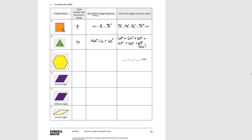Stop the video and try it with the pattern block shown in C. For this one, you should have been able to fit three pattern blocks around the central vertex. So our equation here would be 360 divided by three is 120. So each of these angles is 120, and our equation would be 120 plus 120 plus 120 degrees equals 360.